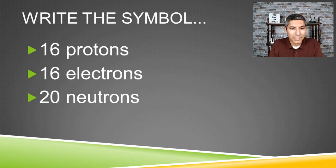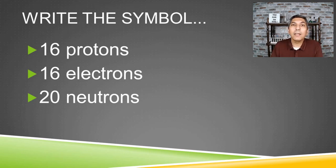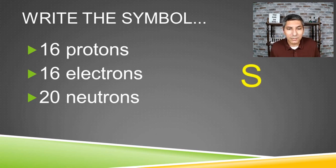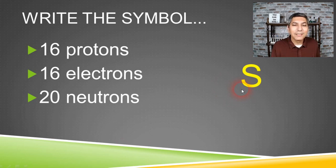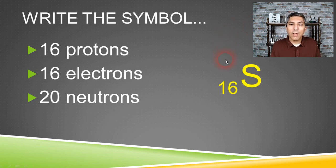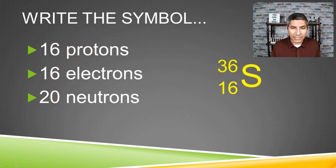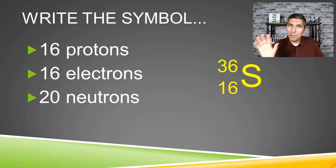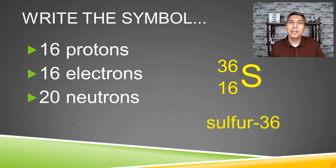Let's write the symbol for an isotope with 16 protons, 16 electrons, and 20 neutrons. Consulting the periodic table, anything with 16 protons has to be sulfur, so the symbol is S. The atomic number 16 goes on the bottom as the subscript. The mass number — the sum of protons plus neutrons — is 16 plus 20, which is 36, and that goes on top. So the symbol is 36 over 16 S. The name of this isotope is sulfur-36.